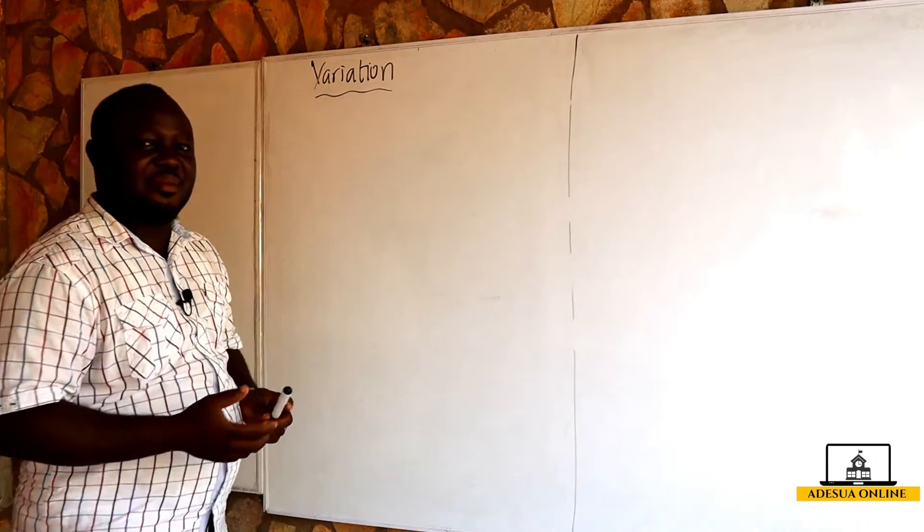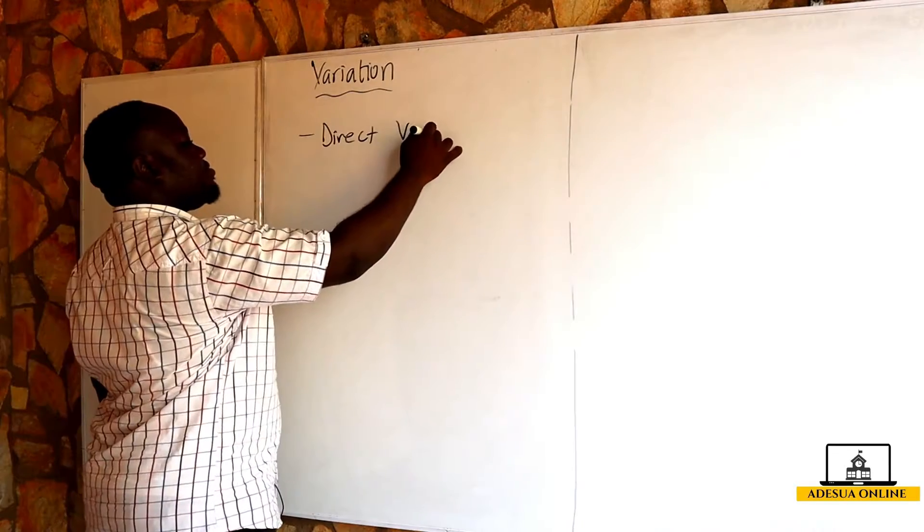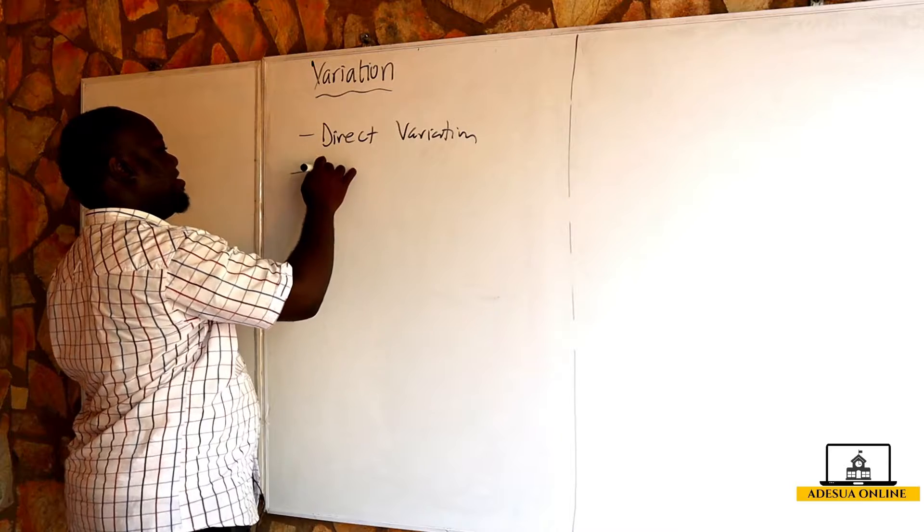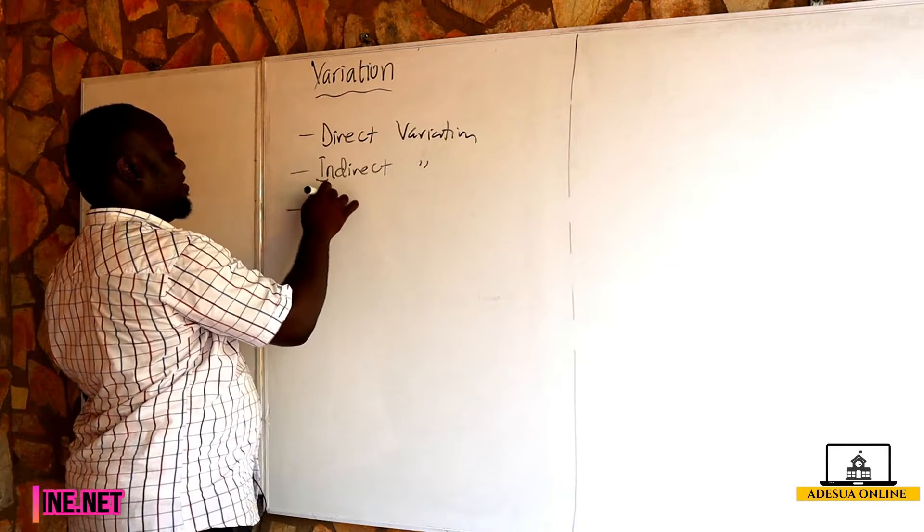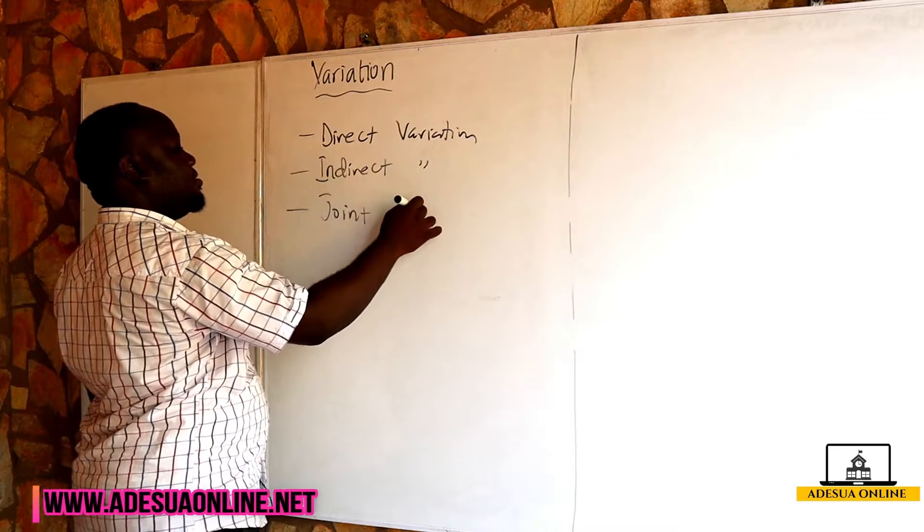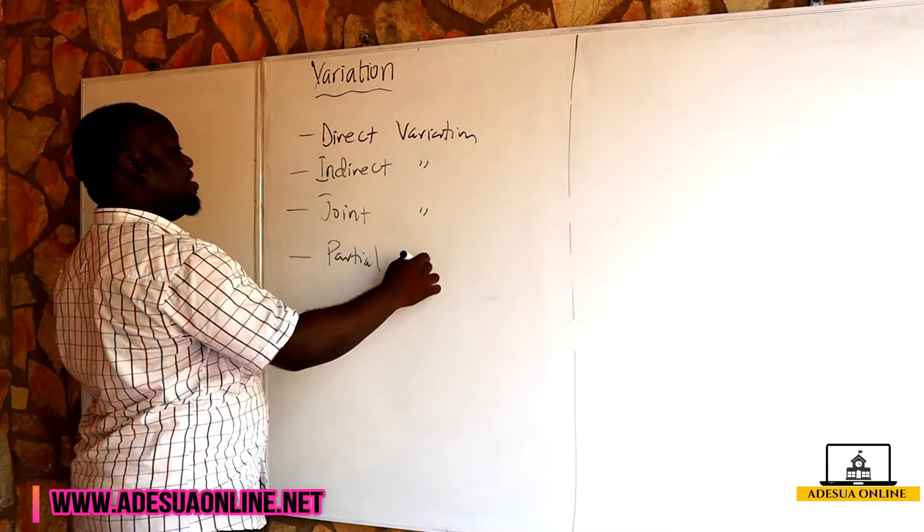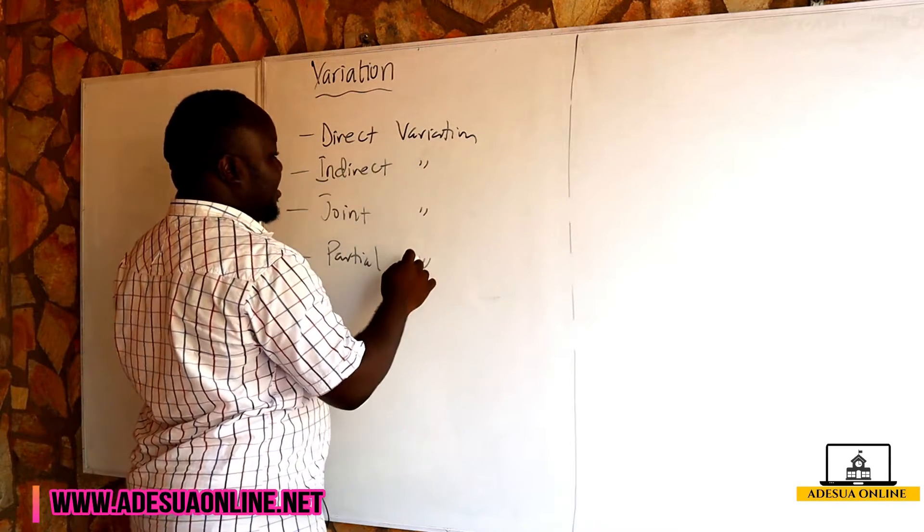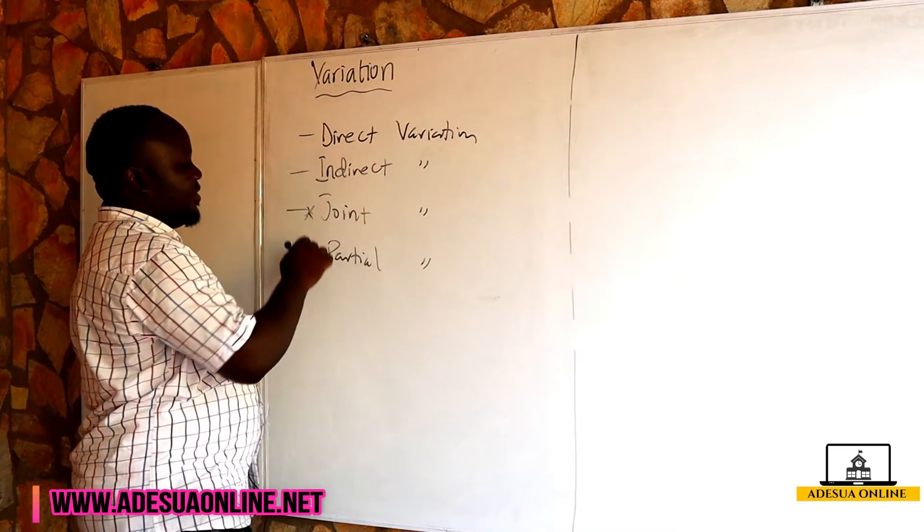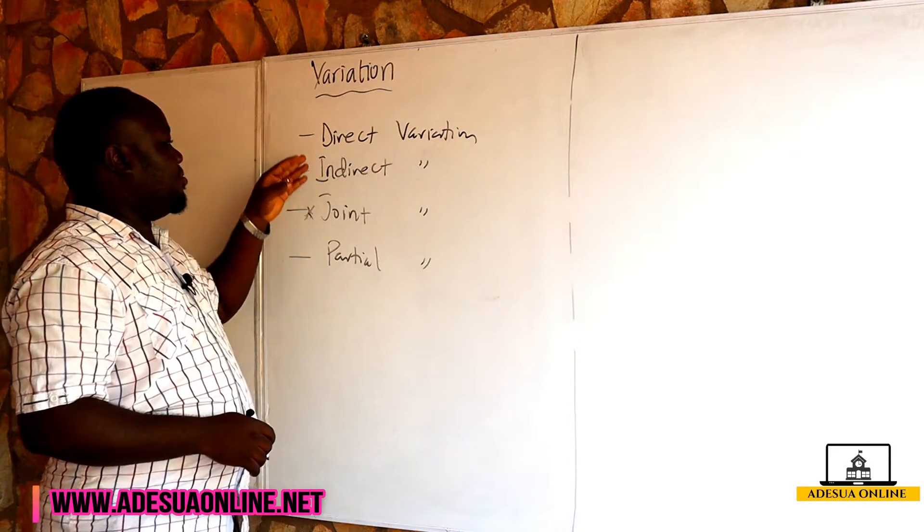Now we have some types of variations: direct variation, indirect variation, joint variation, and partial variation. The joint variation brings a combination of direct and indirect variation.